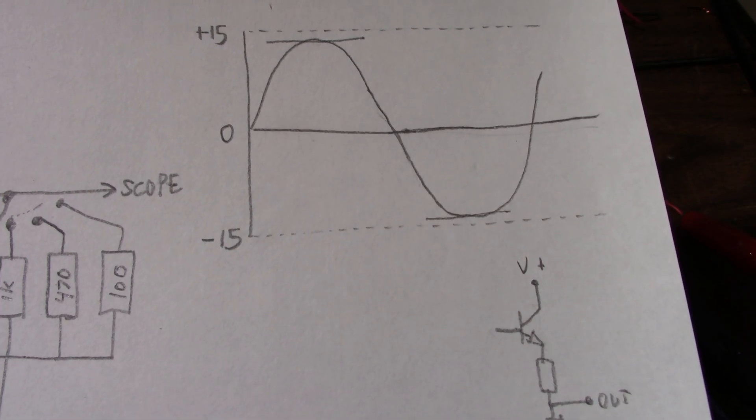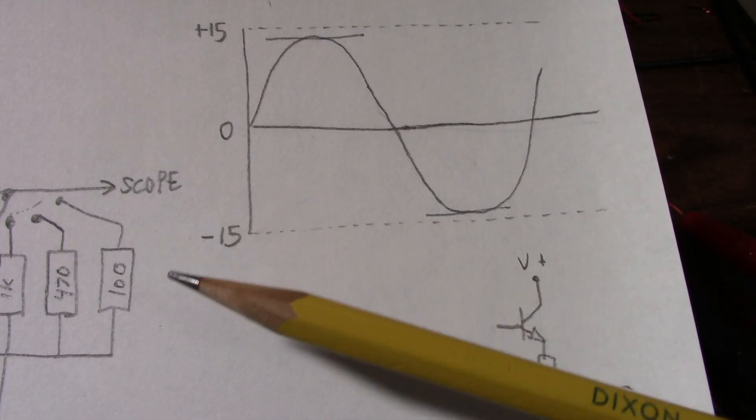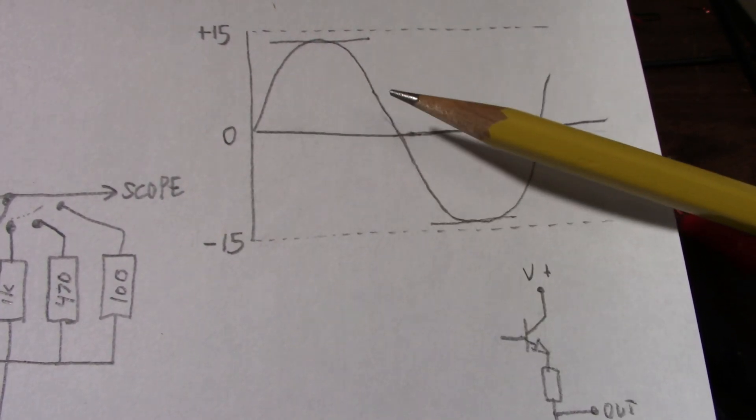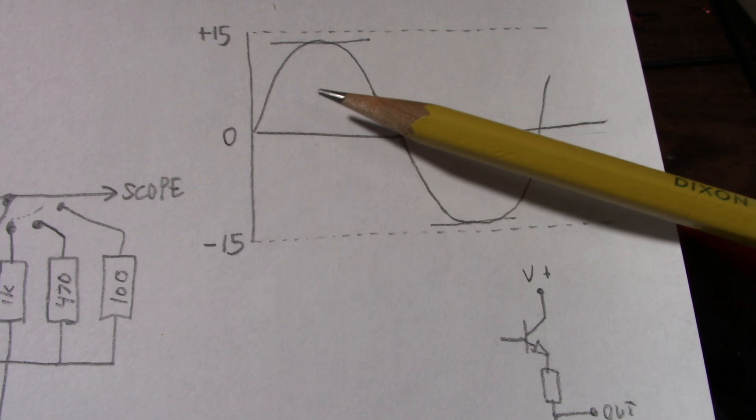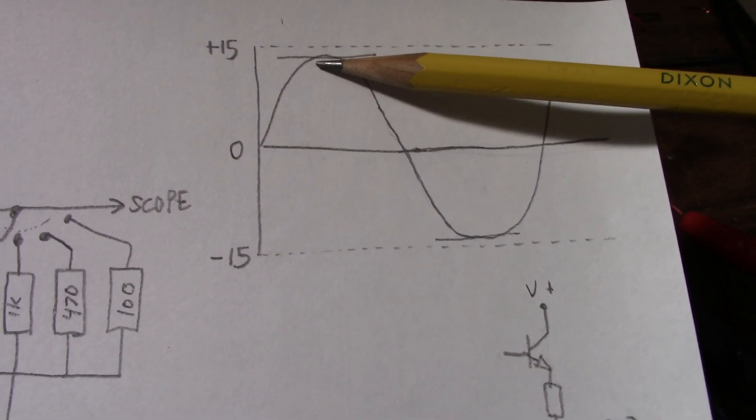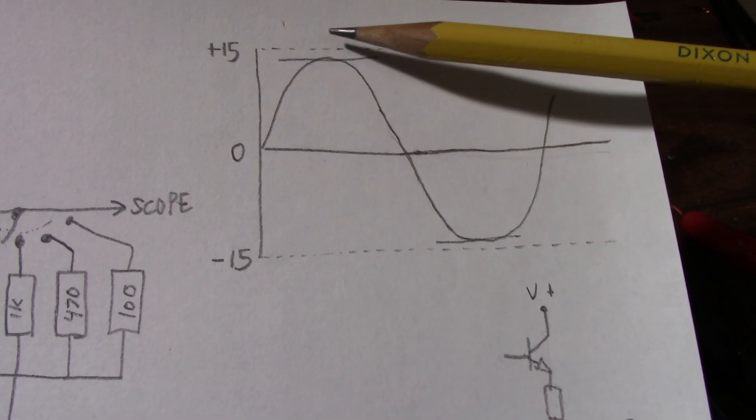Now you'll notice that the output cannot swing all the way to the rail, and the reason for that is, well, take a look at this very simplified output stage.